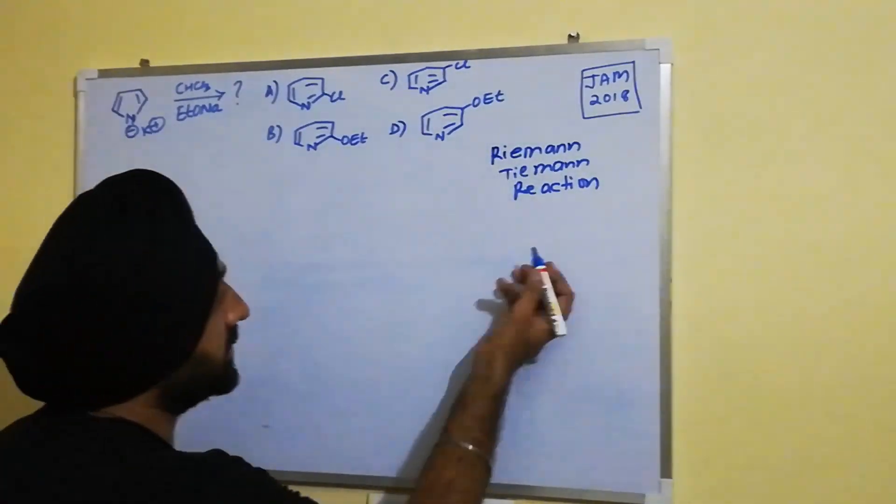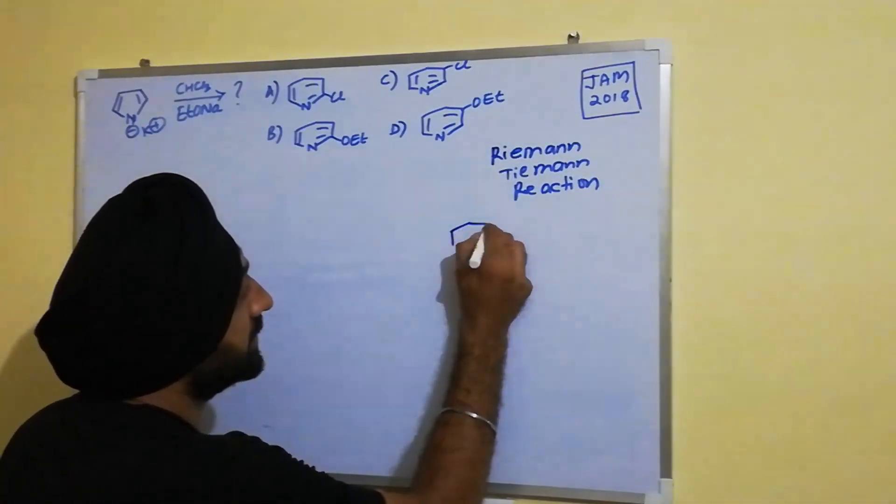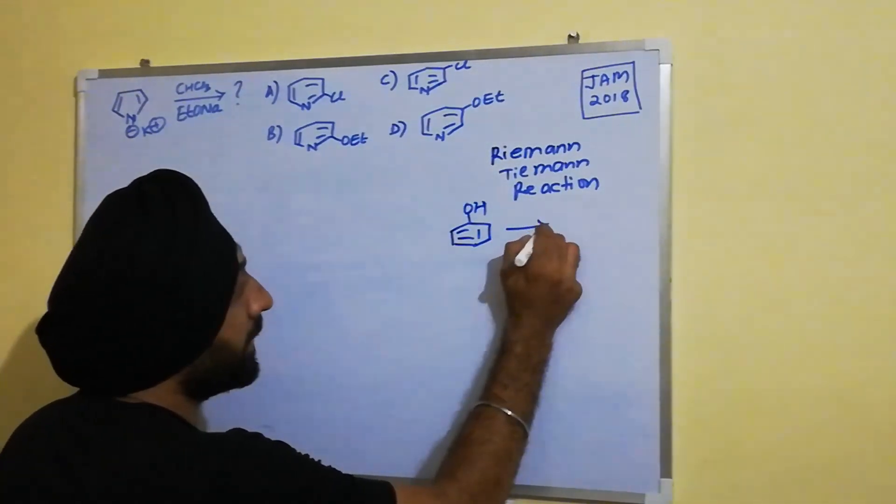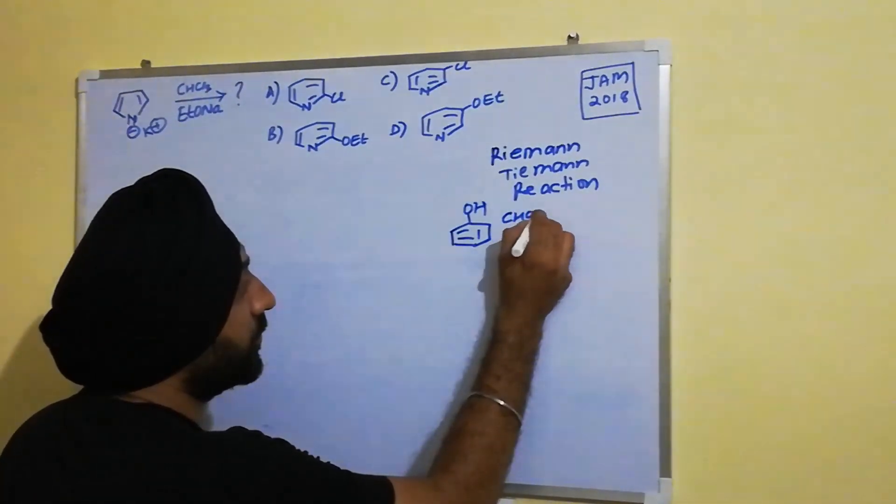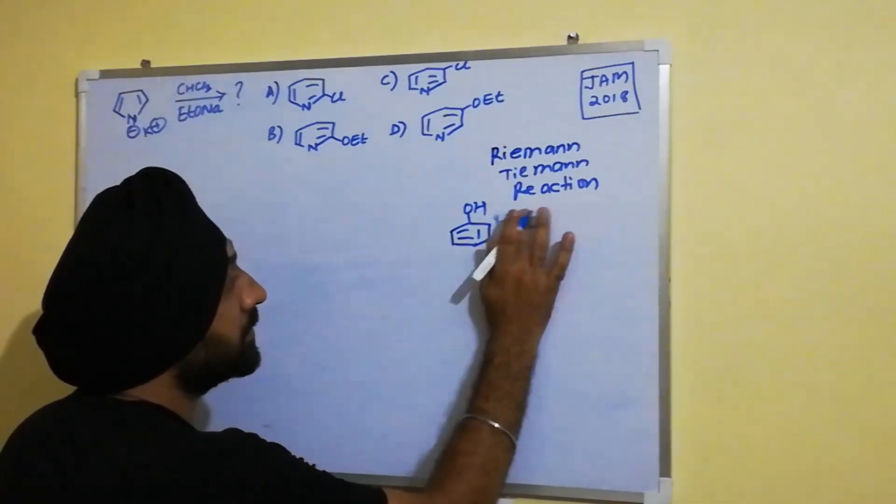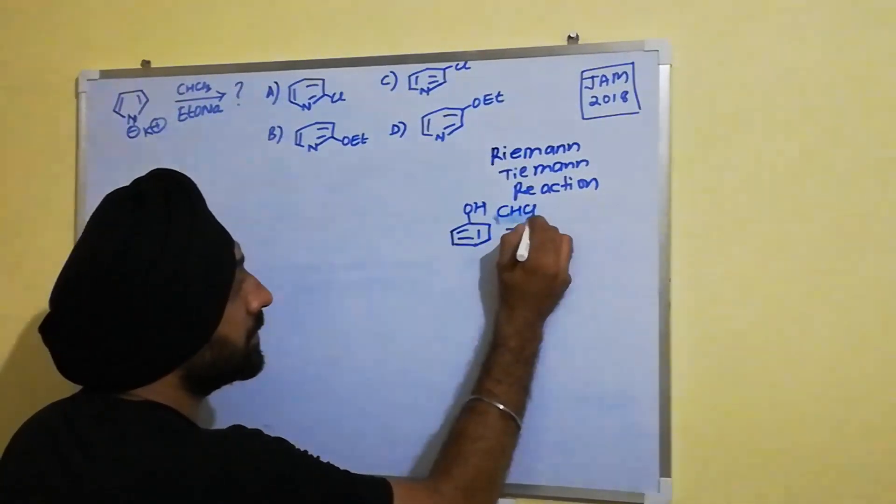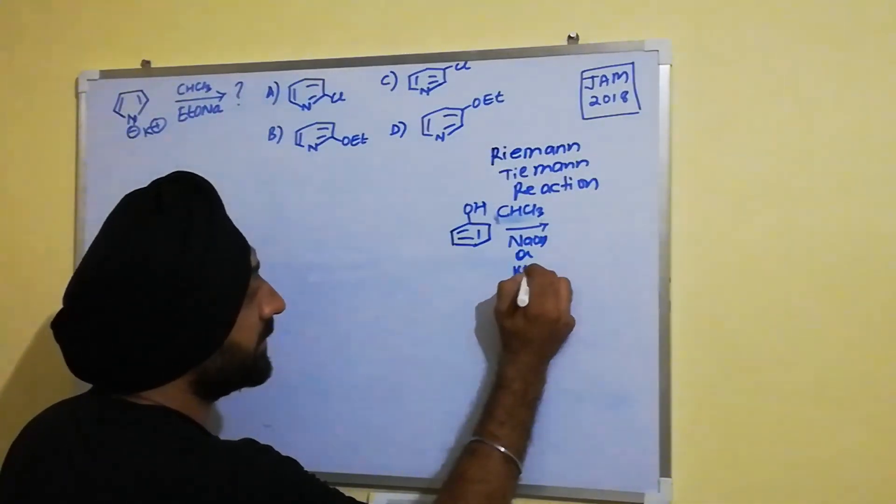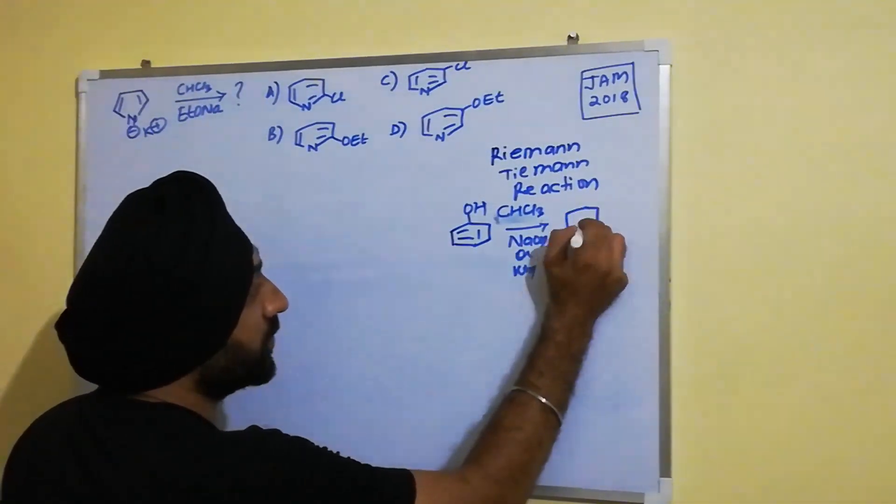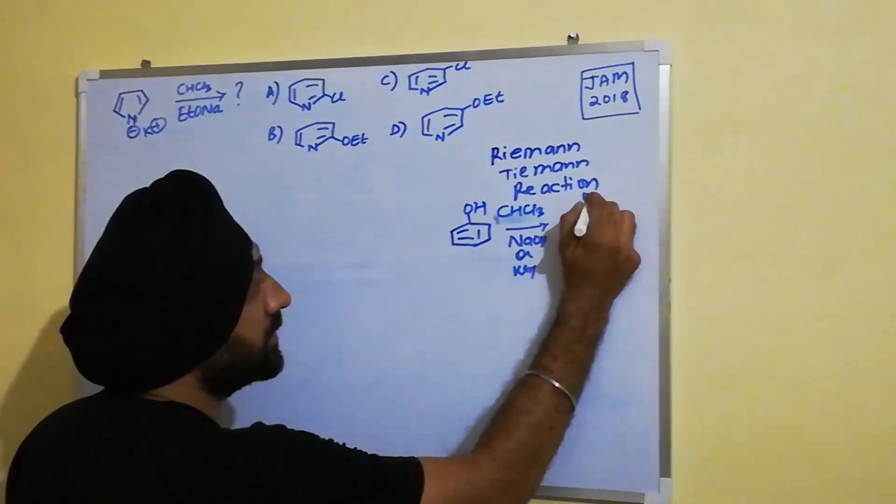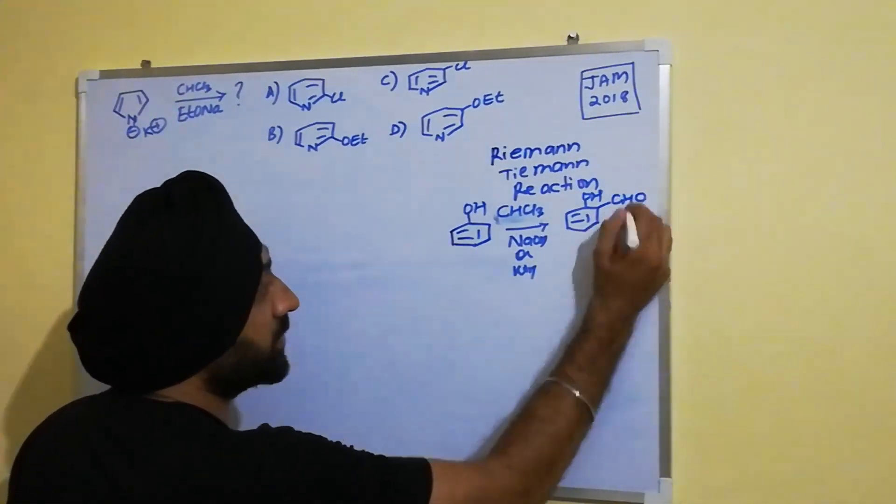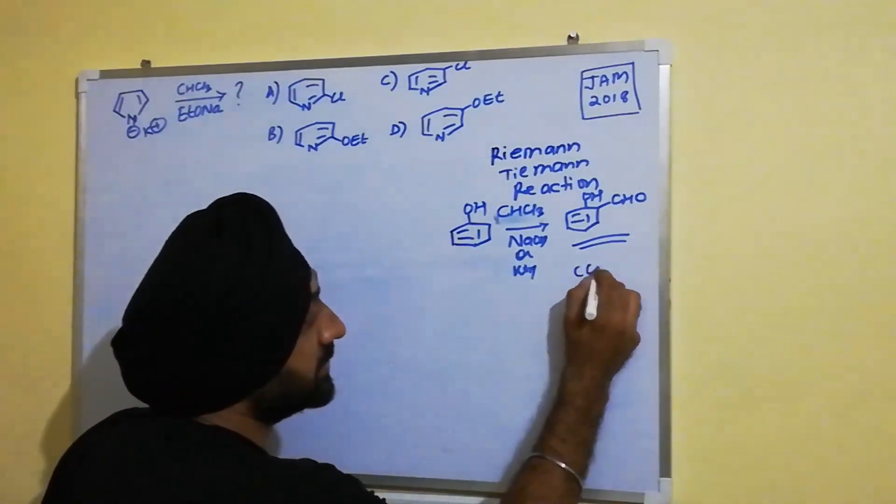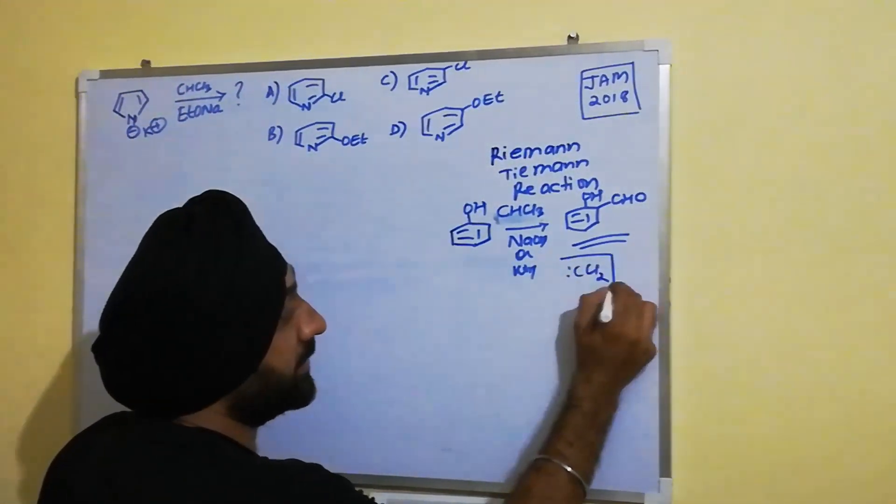For example, in Riemann reaction what you have is phenol which when treated with chloroform with NaOH or KOH as a base, leads to the formation of orthohydroxybenzaldehyde, and the intermediate in this particular reaction is dichlorocarbene.